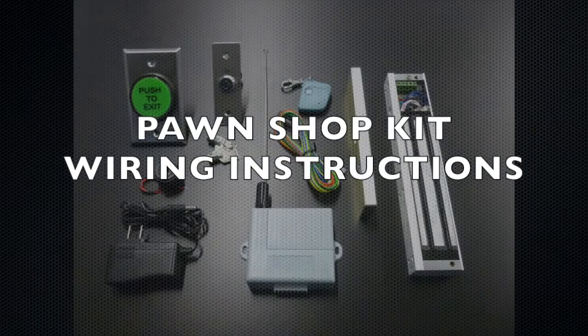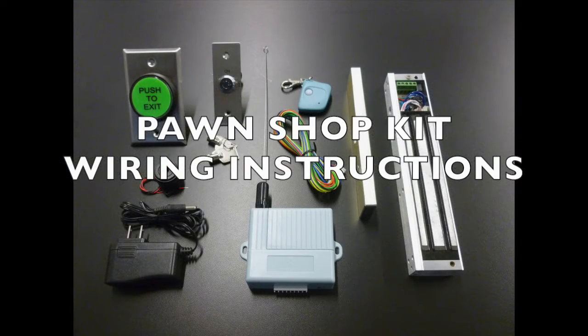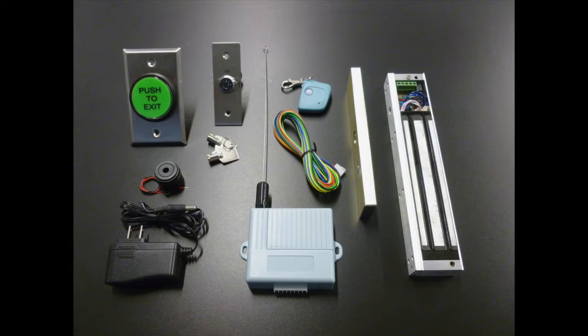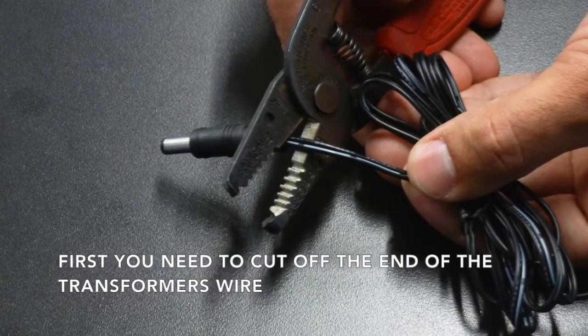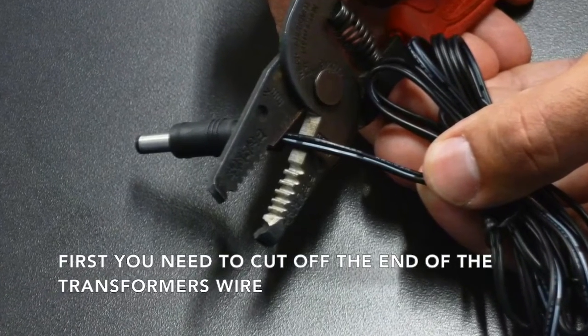Pawn Shop Kit Wiring Instructions. First, you need to cut off the end of the transformer wire.